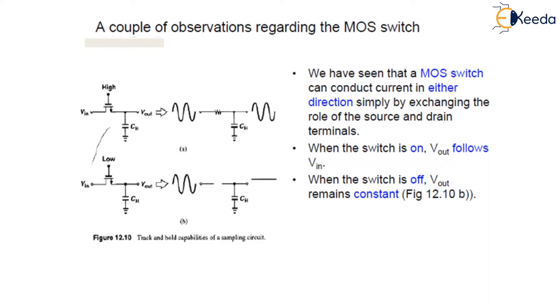As shown in this figure, you can see when the switch is on, that is clock is high, this Vout follows Vin. And when the switch is off, this is low, Vout remains constant. So the circuit tracks the signal when the clock is high and freezes the instantaneous value of Vin across CH when CK is low. So this is the track and hold capability of a sampling circuit.